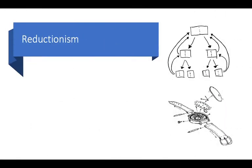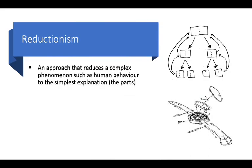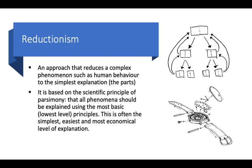That was holism. Now reductionism analyzes behavior by breaking it down into constituent parts. Think of understanding a watch by breaking it down to all its different gears. Reductionism tries to understand humans by the simplest explanation. This is known as parsimony — the idea that all phenomena should be explained using the most basic or lowest-level principles. This is often the simplest and most economical level of explanation. Think Occam's Razor.